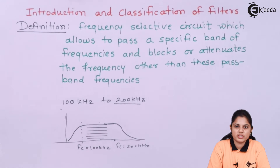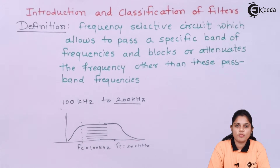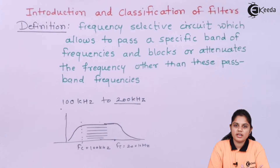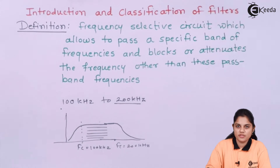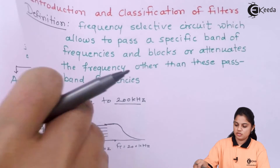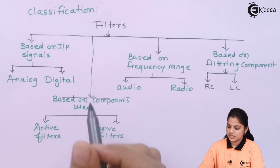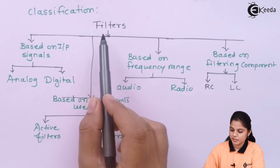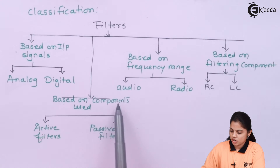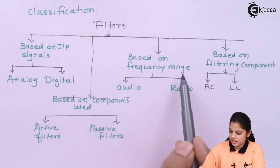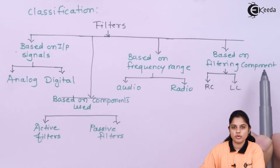Now depending on the definition, a filter can be designed using different components. Components can be passive or active, and filters can operate over different frequency ranges. Depending on these parameters, filters are classified into four types: based on input signal, based on components used, based on frequency range, and based on filtering component used.